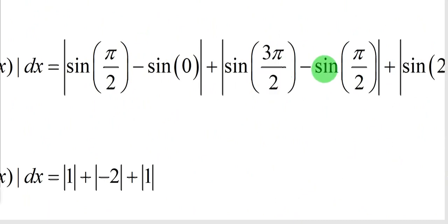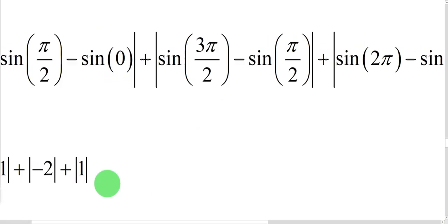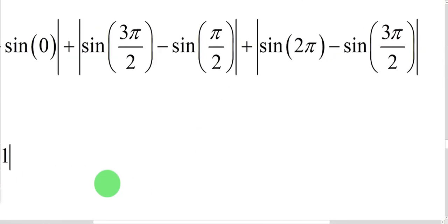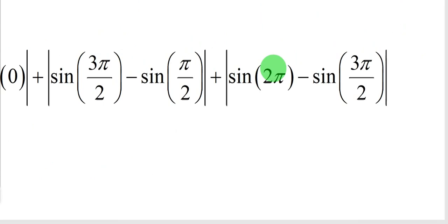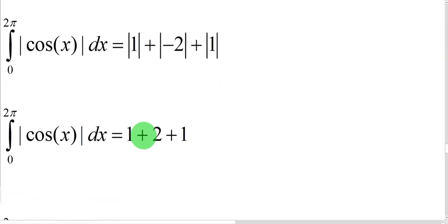It's -1 minus 1, which is -2. But the absolute value of that is positive 2. Our last piece is going to be 0 minus -1, which is positive 1. So it will remain positive.